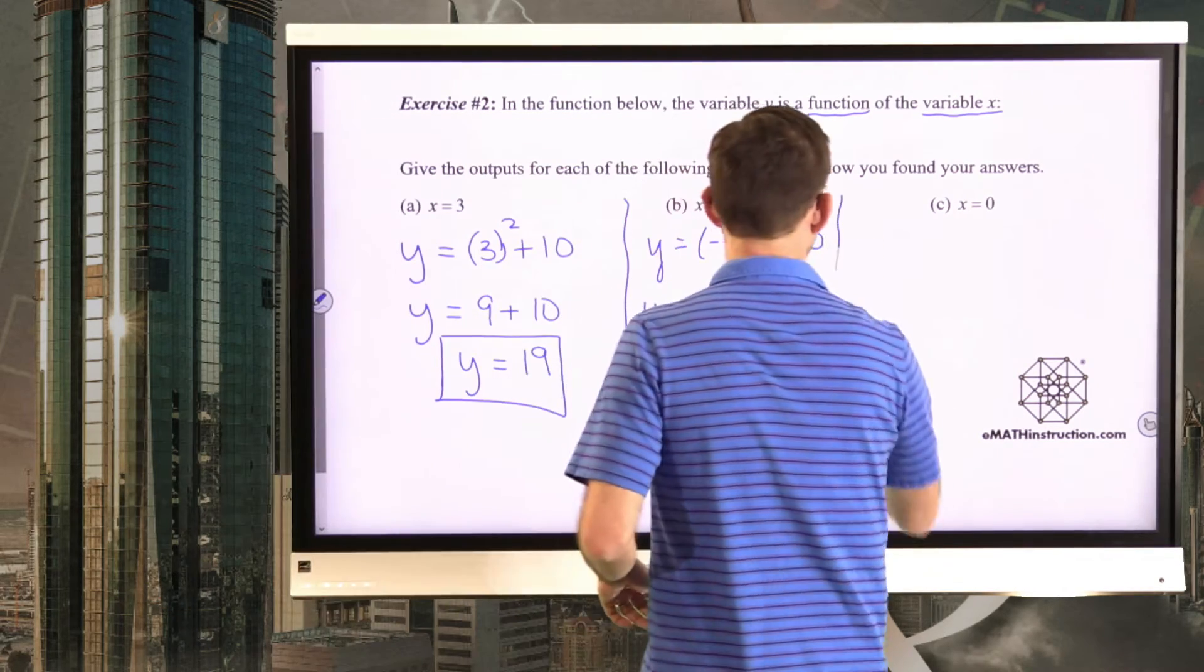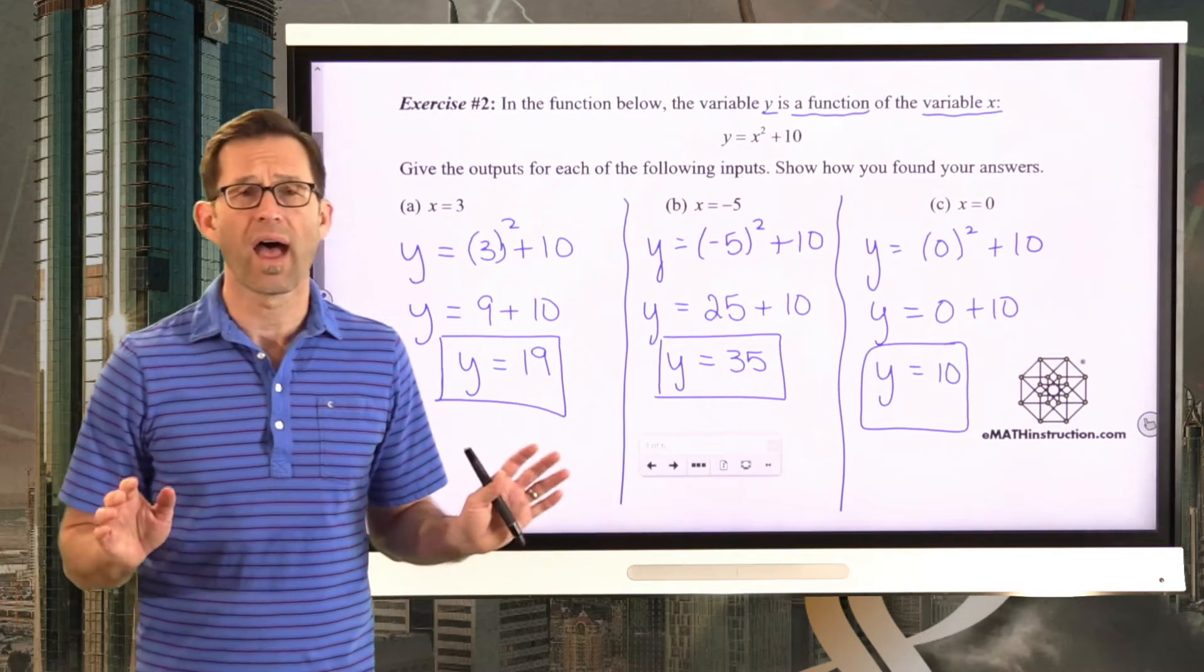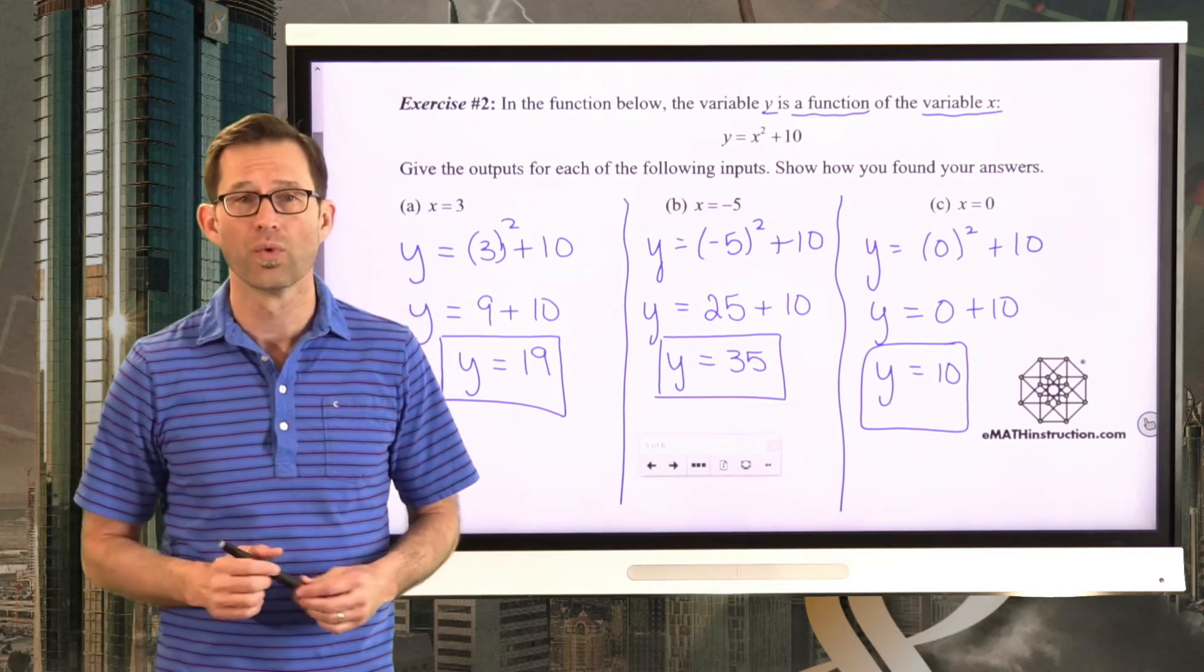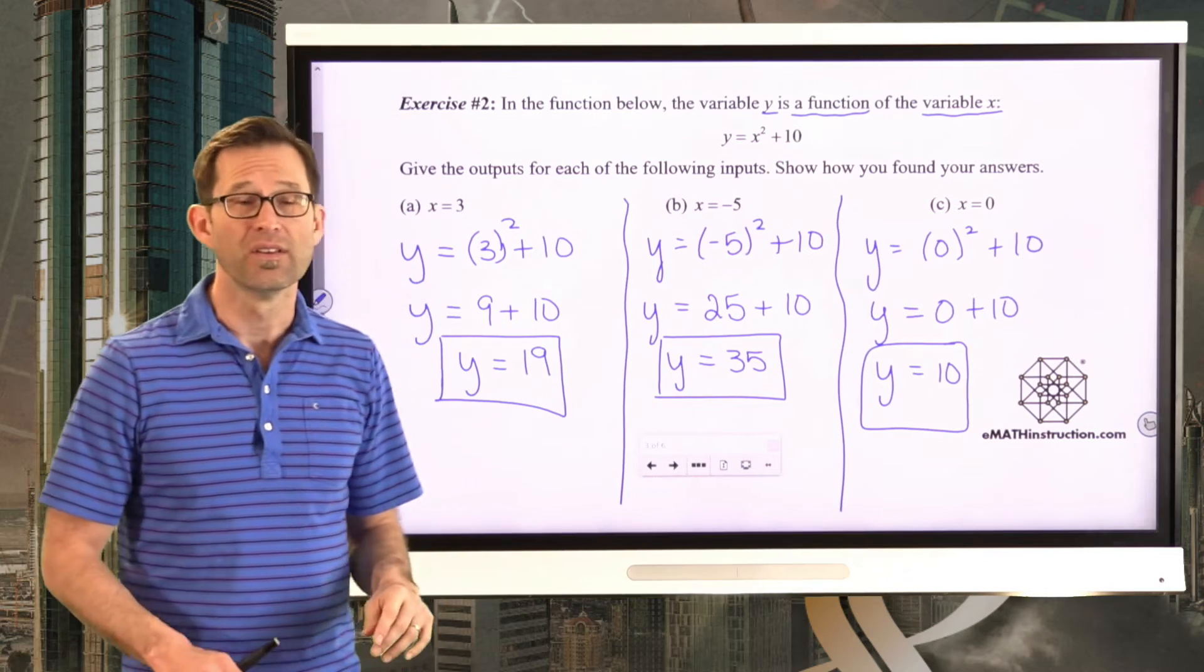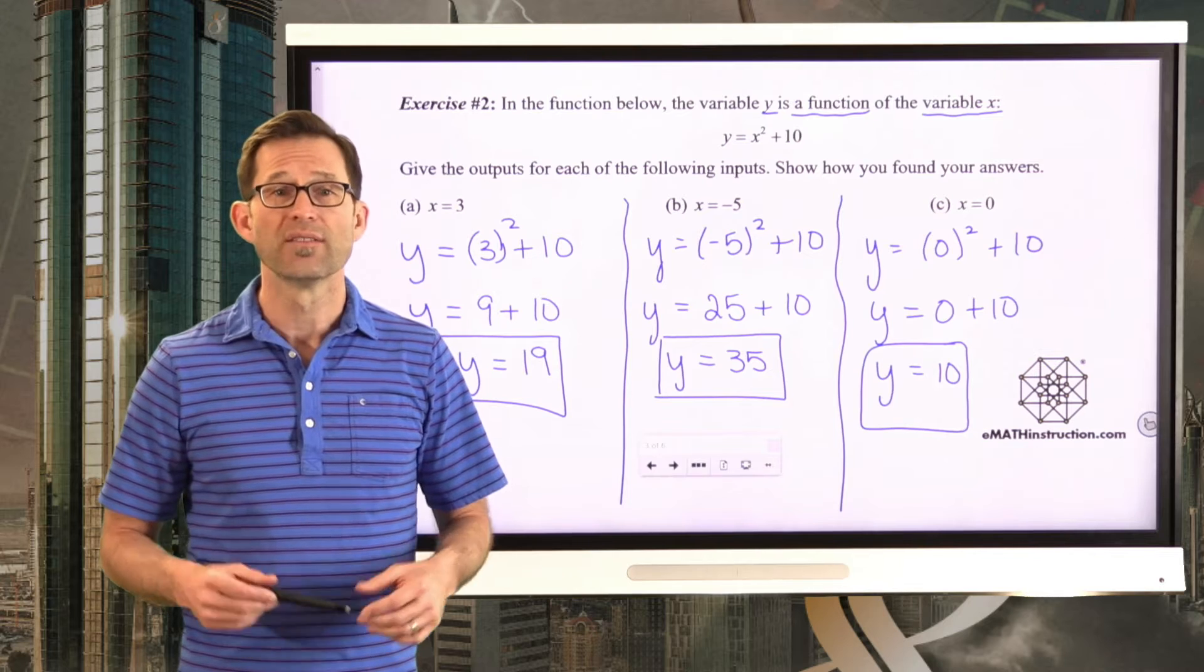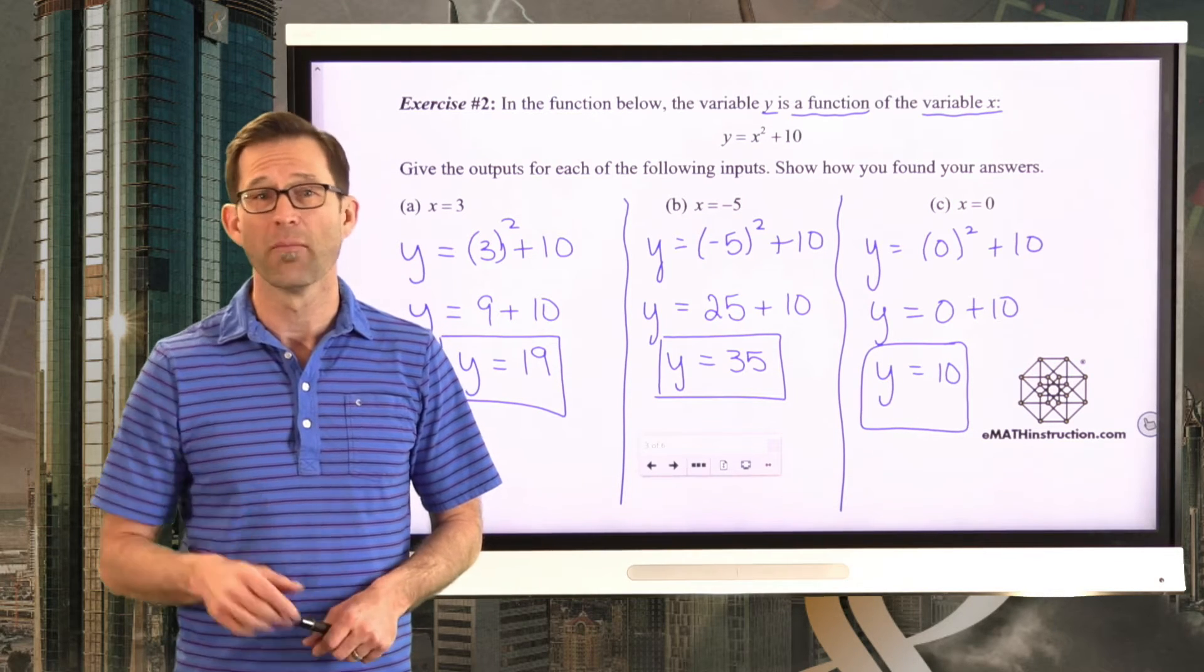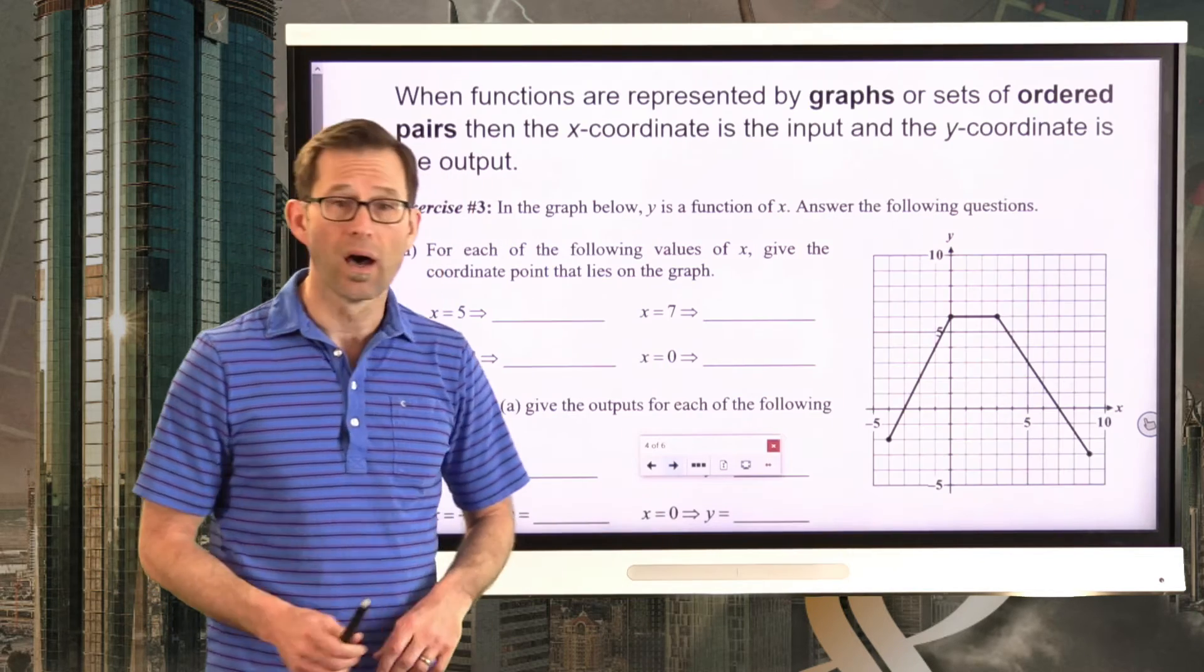That's our rule to give us the output. And of course, when x is 0, very easy here, we're going to have 0 squared plus 10. 0 times 0 is 0, and 0 plus 10 is obviously just 10. That's it. Equations are fantastic ways to represent function rules because you can literally say, the output equals blank. And then you give some kind of an arithmetic expression, an algebraic expression that tells us what to do with the input in order to get the output. Simple enough.